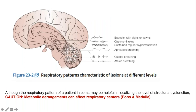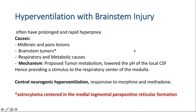As the lesion progresses caudally and the midbrain is affected, the patient goes into sustained hyperventilation. Sustained hyperventilation happens with involvement of the midbrain or superior pons, commonly due to a pontine tumor, astrocytoma, or ischemic/hemorrhagic insult. The mechanism is that a tumor creates an acidic environment in the surrounding CSF, which is picked up by sensory receptors and stimulates hyperventilation to wash out CO2 and balance the acidic environment.